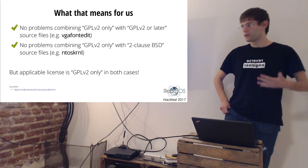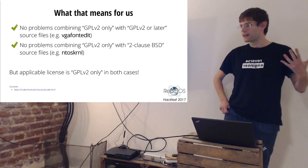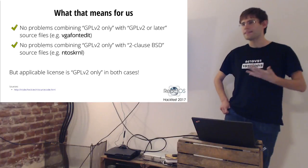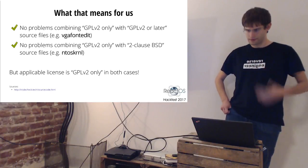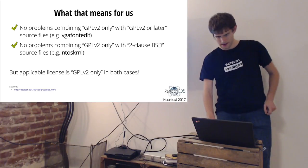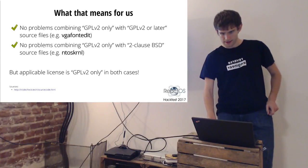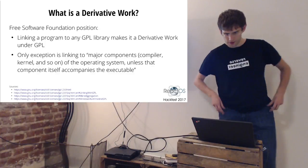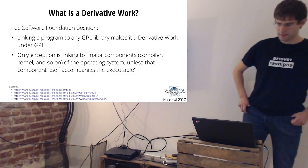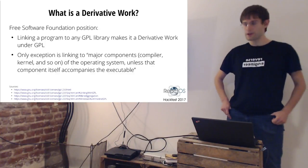Even if those are the so-called declared licenses per file, the actually applicable license for the entire work — being VGA font edit or NDOS kernel — is GPL2-only in both cases, because GPL2 affects the entire work. The other central question is: what is a derivative work?